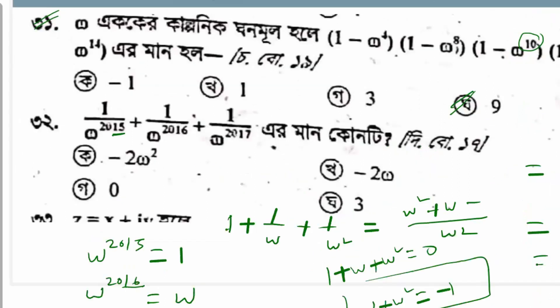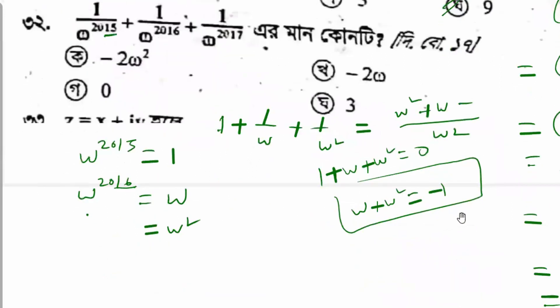We will get 0. Here, we will get minus 1. If omega squared equals 1, we will get the result equal to 0. Now, if you want to know the basic formula, then you will know how to do it.